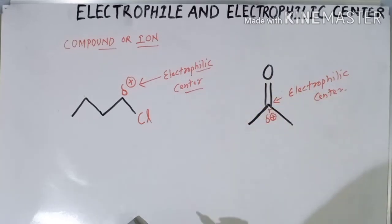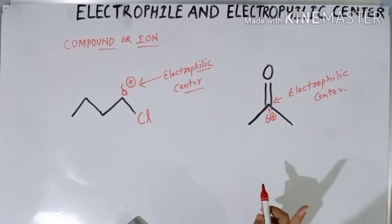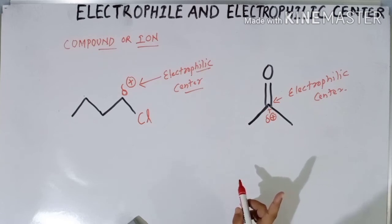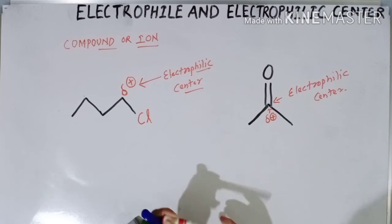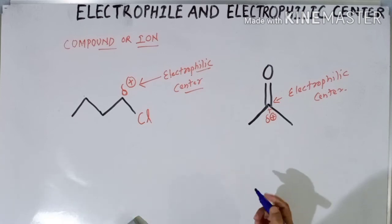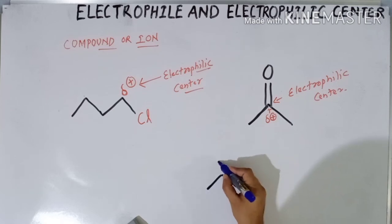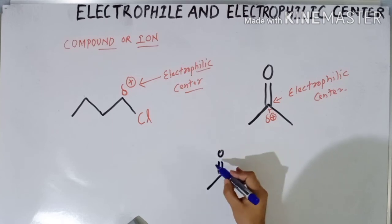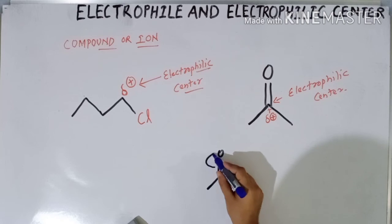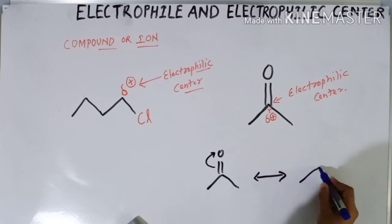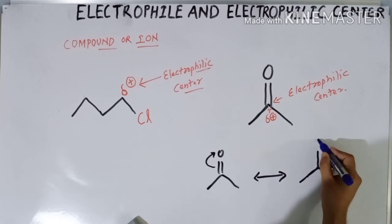The whole molecule becomes an electrophile. Now, not only the inductive effect plays a role in developing the positive charge on this carbon — another mechanism also works, which is the resonance effect. So how does the resonance effect cause this molecule to become an electrophile? In resonance, the electrons of this bond are shifted towards the oxygen.